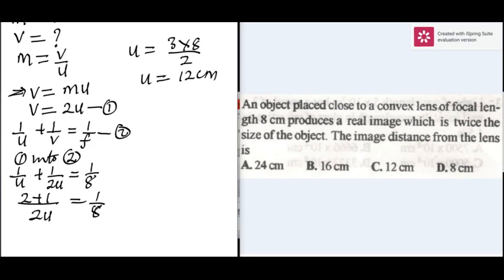And from equation 1, v is equal to 2u. That is 2 times 12. v is 24cm. So the image distance from the lens is 24cm.